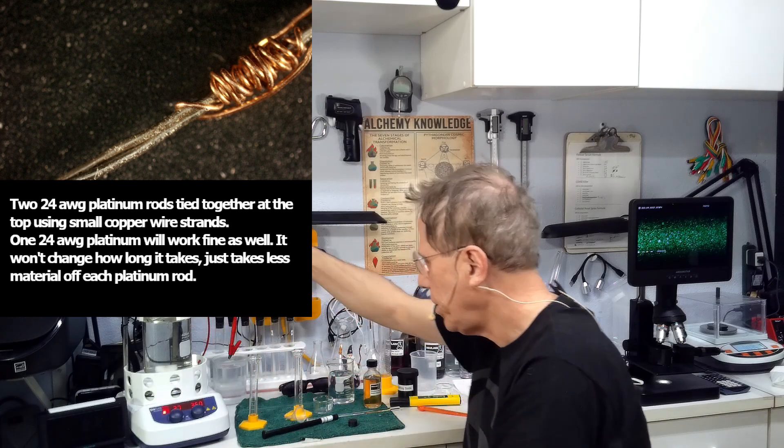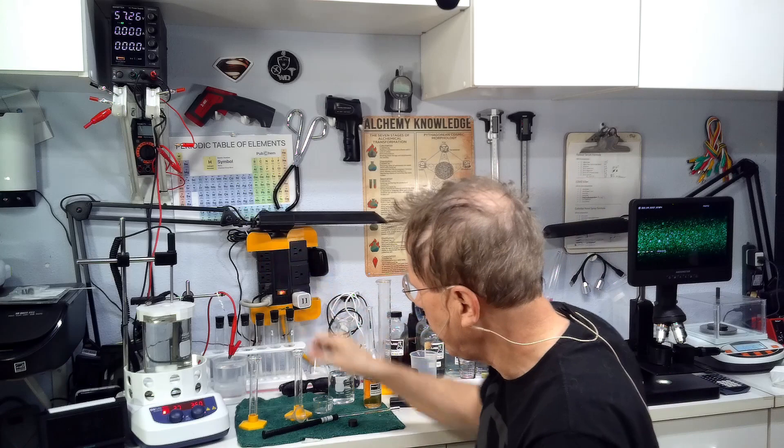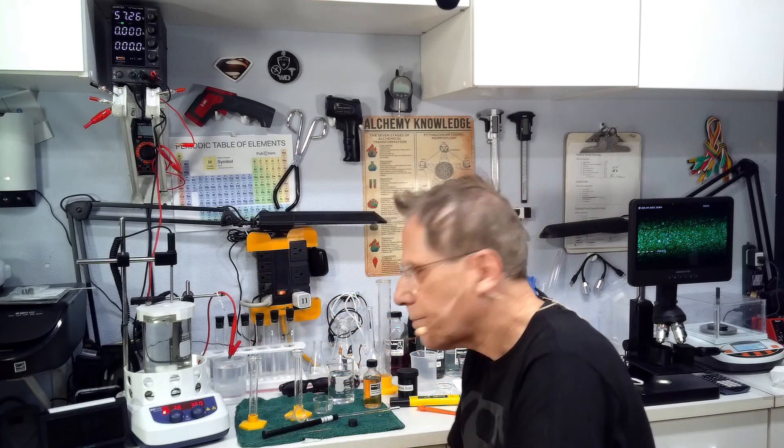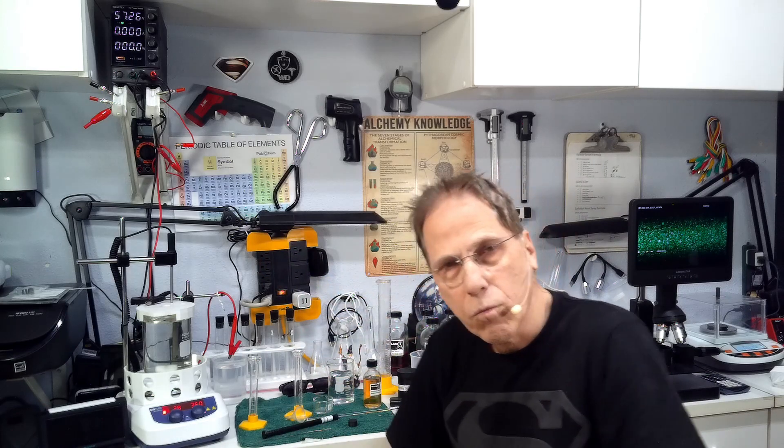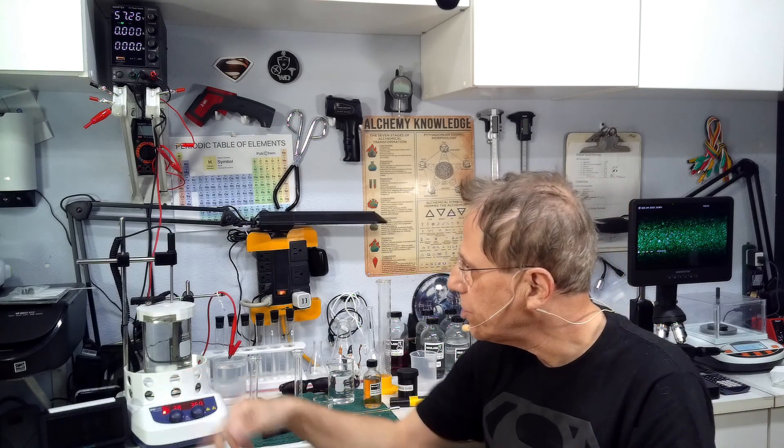The process is going to take about five to eight hours. I'm hoping with the 24 gauge platinum rods, I got them twisted together at the top. I want to do a weight on these first before I put them in there. I will be back as soon as this temperature reaches over 70 degrees C.